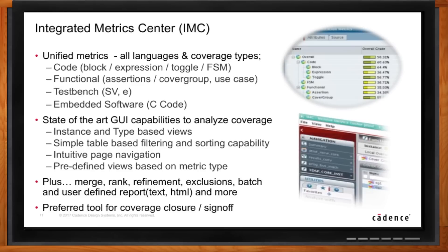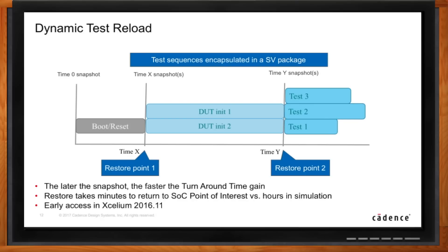Dynamic test reload allows you to take current restore points used for save and restore, make changes to your tests, and reuse those restore points. In the past, you would have always had to change those tests and then rerun your entire simulation to get to the restore point, the point of interest, and then use those new tests. Typically, I'm using save and restore and debugging a problem, figuring out if the functional activity and behavior is what I want it to be. In the process of that, I realize there are other tests I want to make. If I could only make those subtle changes to the tests and reuse that restore point — skipping those hours of simulation runtime — that would be wonderful. Now we've made that possible.